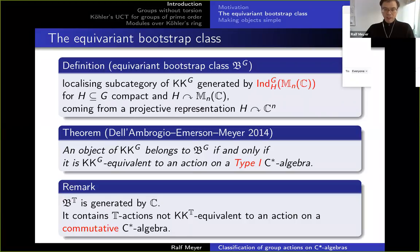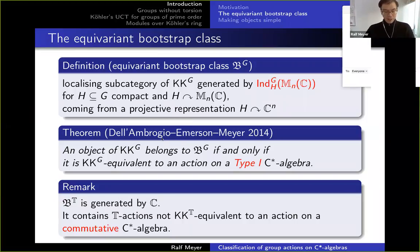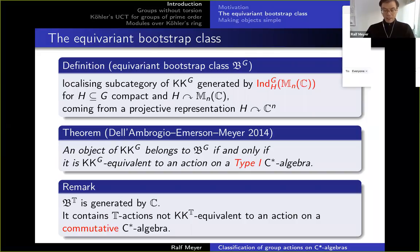These are rather special proper actions: induced from a compact subgroup where the action of the compact subgroup on a matrix algebra comes from a projective representation on ℂⁿ. Why this particular definition? A theorem from a previous paper with Eva-Maria Feichtner and Heath Emerson says: an object of KKG belongs to this bootstrap class if and only if it is equivariantly KK-equivalent to a G-action on a separable type-one C*-algebra.